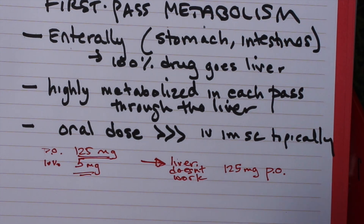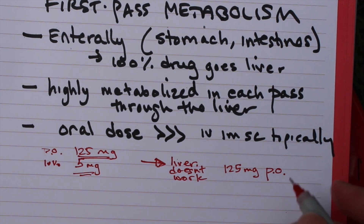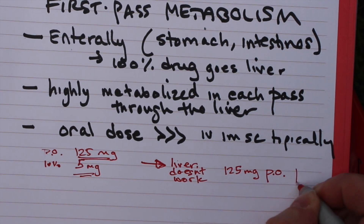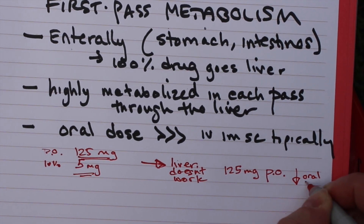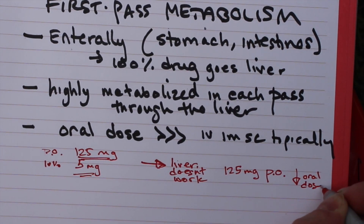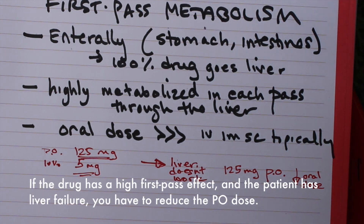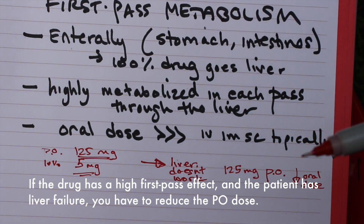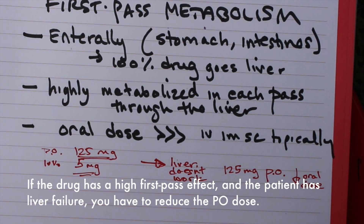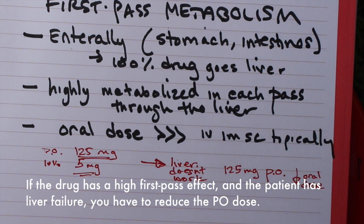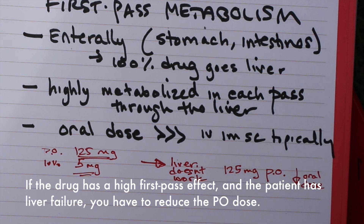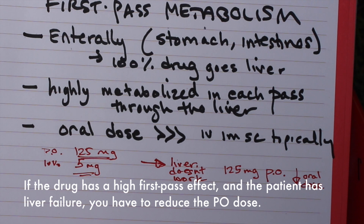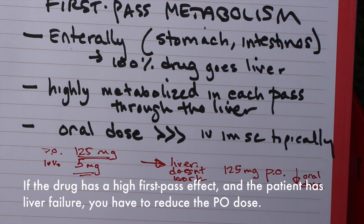Because the liver doesn't work, you have to reduce the oral dose. Generally speaking, with drugs that have high first-pass metabolism, if a patient has poor liver function, you're going to have to reduce the oral dose. Hopefully that makes sense. If it still doesn't, you know how to reach me.